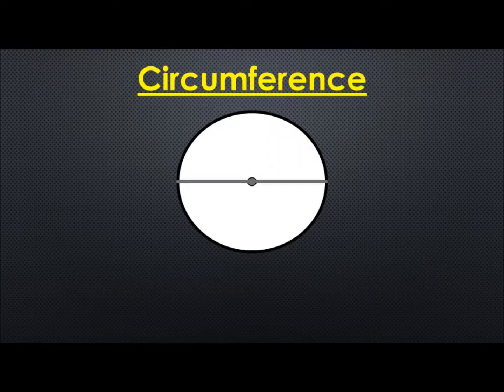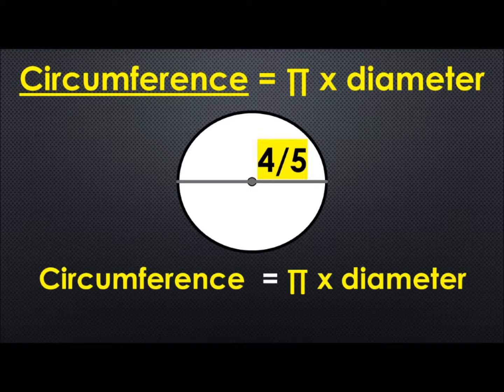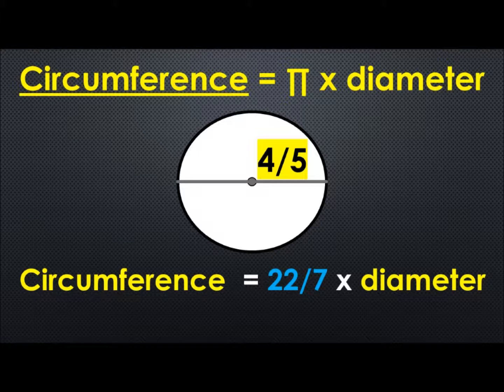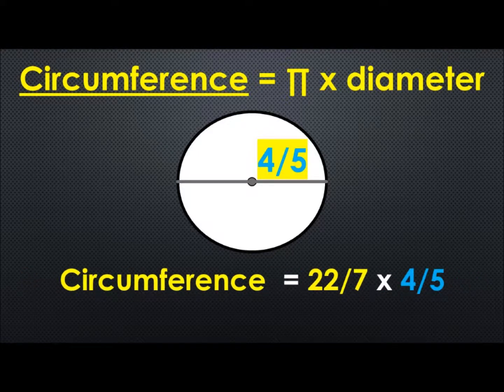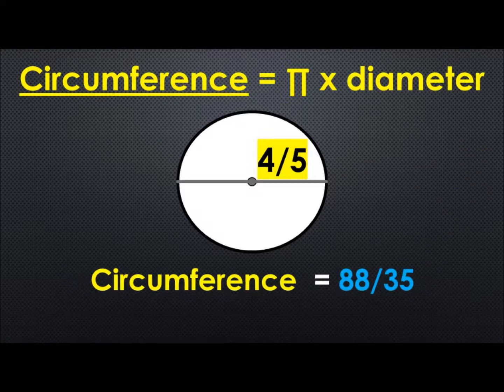Now we need the diameter for the next formula which is pi times the diameter gives us the circumference. Now we want to use the fractions on this one. So I'm going to plug in 0.8 and the fraction form of 0.8 is 4 over 5. We're going to plug in our fraction form for pi which is 22 over 7. We're going to plug in the diameter which is 4 over 5 and we're going to multiply those. 22 times 4 gives us 88. 7 times 5 gives us 35. And we're going to put this down here, make it equal to the circumference. So 88 over 35 units is the circumference.